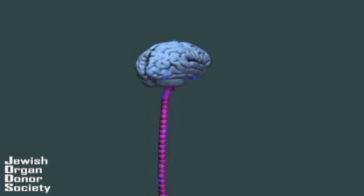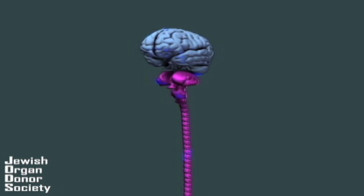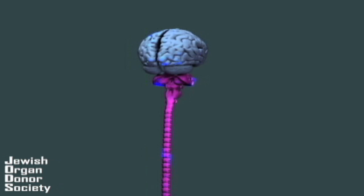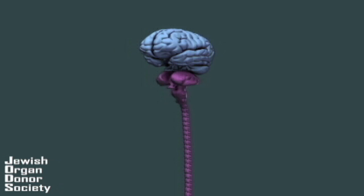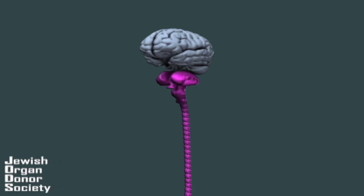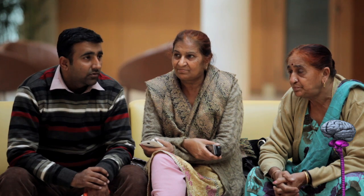Let us start by understanding anatomy. The brain consists of two parts: the cortex and the brainstem. The cortex is the larger part of the brain and the brainstem is the smaller. The brainstem is actually the top of the spinal cord. The cortex controls higher functioning activities such as reading, writing and talking.